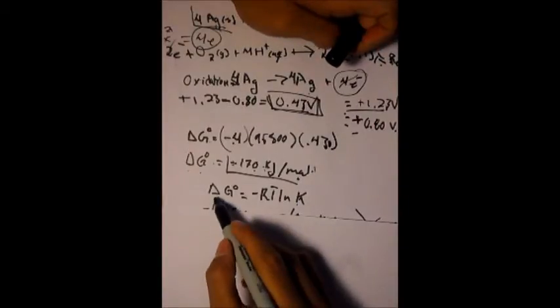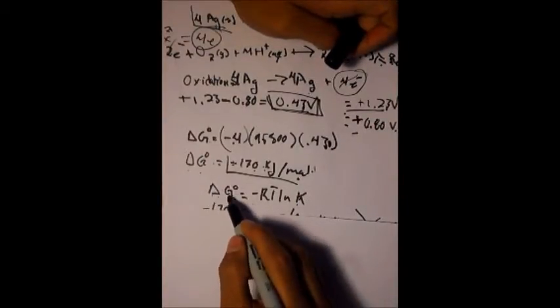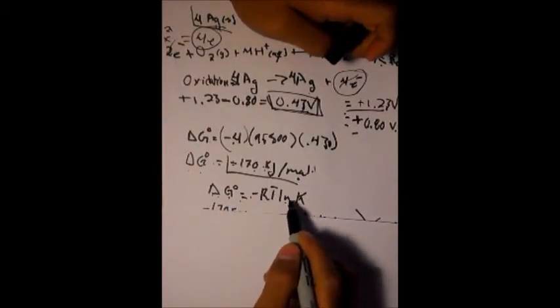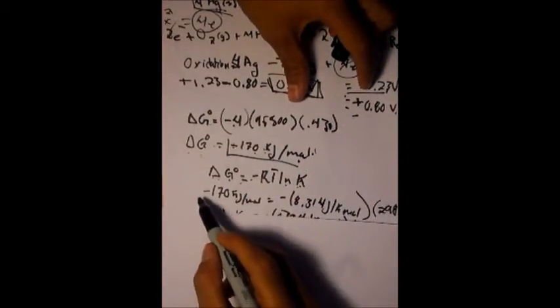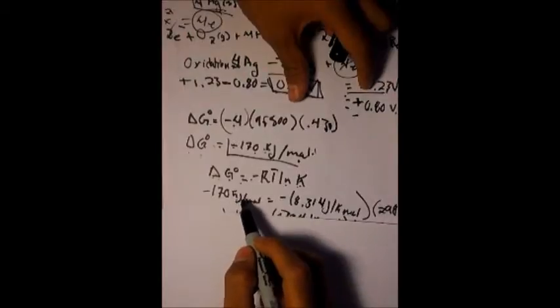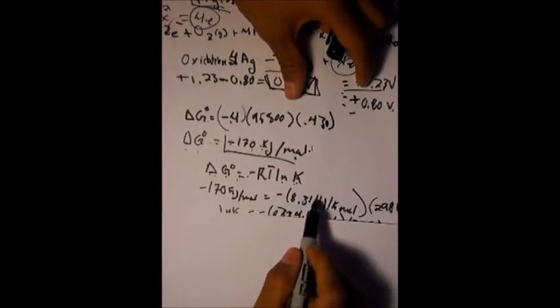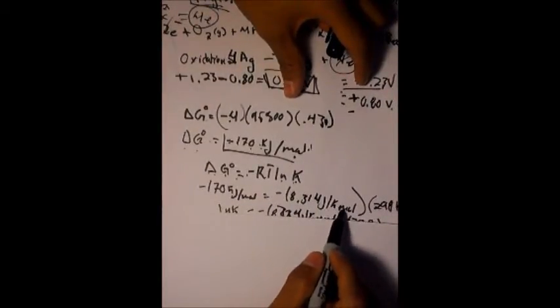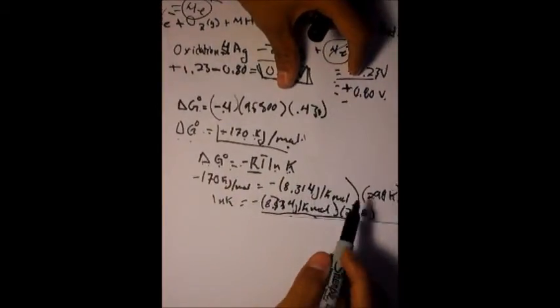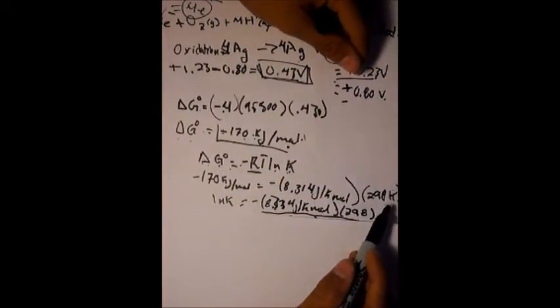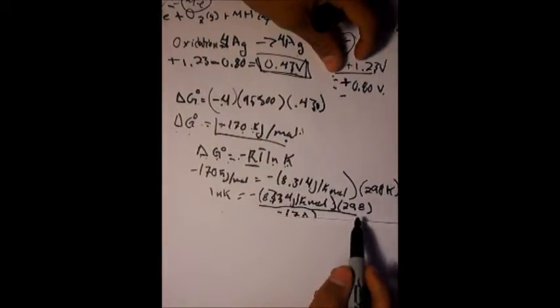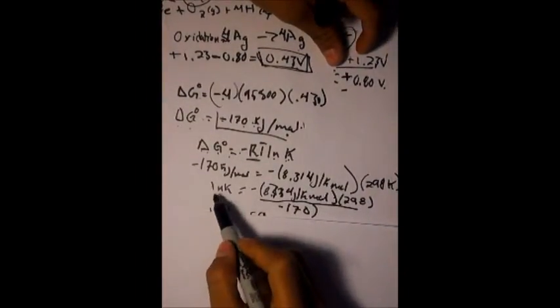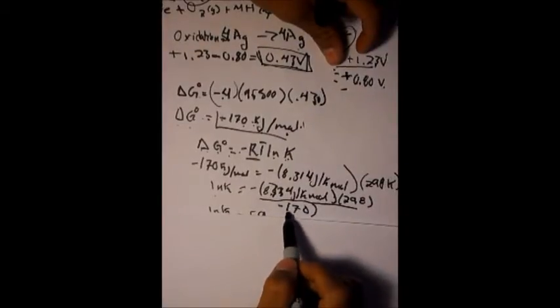To find the K constant, you have to use this formula: Delta G equals negative RT ln K. Then you will plug in your values of negative 170 kilojoules equals 8.314 joules per mole (this is the R) and then the 298 Kelvin which is given times ln K. The ln K will come outside and multiply this and divide by the Delta G.